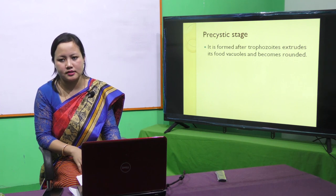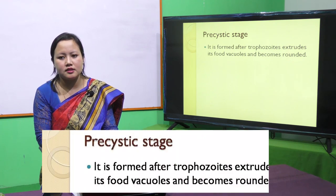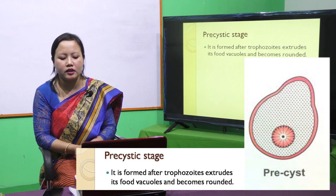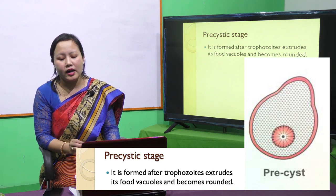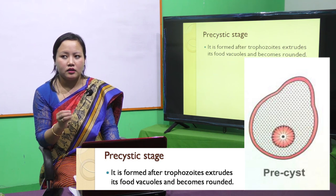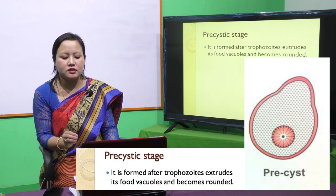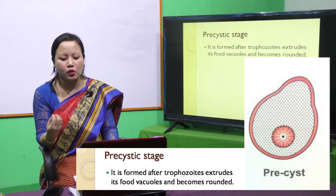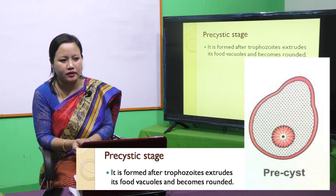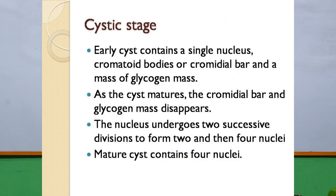In the pre-cystic stage, the organism takes on a rounder shape. The food vacuoles present in the trophozoite are extruded at this stage, and the organism assumes a rounder shape before progressing further.